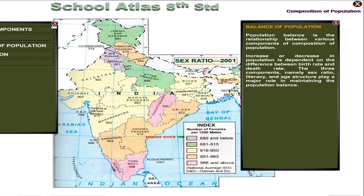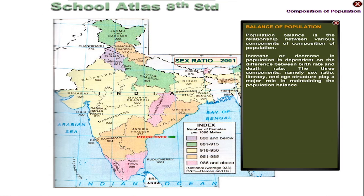Population balance is the relation between various components of composition of population. Increase or decrease in population is dependent on the difference between birth rate and death rate. The three components — sex ratio, literacy, and age structure — play a major role in maintaining the population balance.